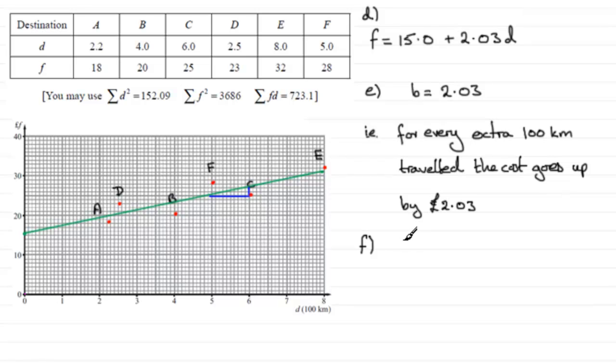So let's just think about what the graph of this rival company is going to look like. The airfare, F pounds, is going to equal simply 0.05 times D. 0.05 being 5p per kilometre.